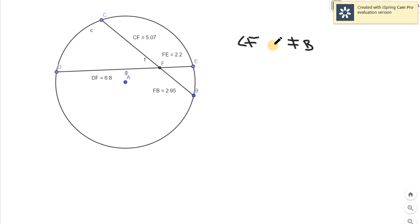The property will state that the parts of the entire chord CB, which is CF and FB, if I multiply them, this would be equal to the parts of your second chord, which is DE. You will have DF times FE. This would be simply the measurement of those segments. The product of the parts of one chord is equal to the products of the parts of the other chord. Let's have the values.